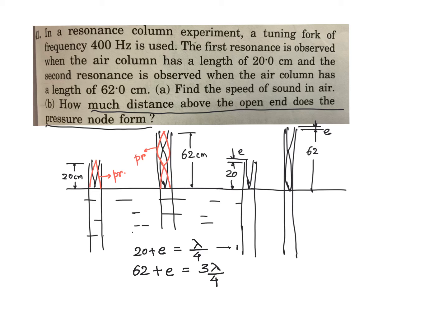This is equation 1 and equation 2. Now, if you subtract the equations what do you get? 62 minus 20 means 42 cm is equal to lambda by 2. Therefore, lambda is equal to 84 cm.